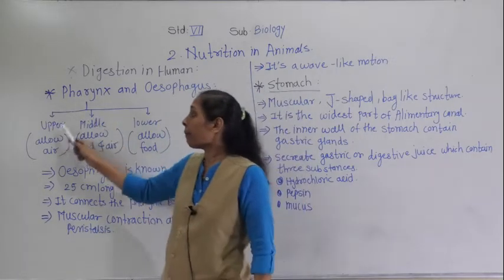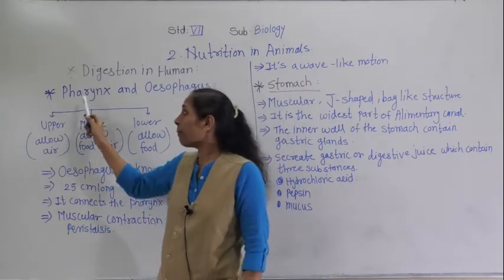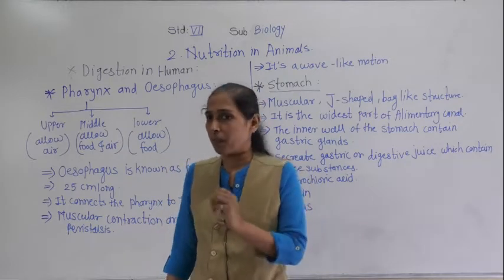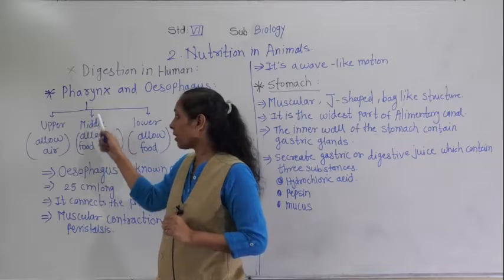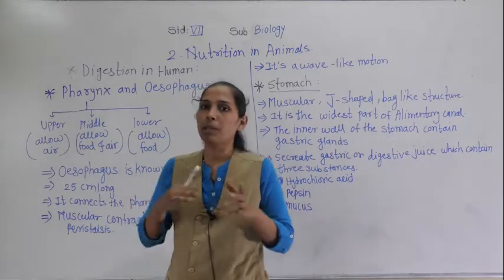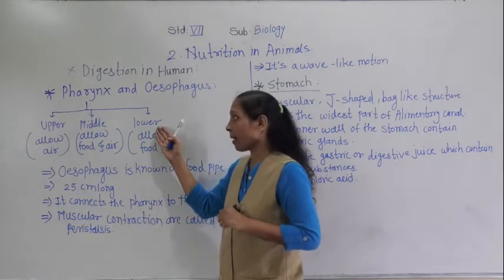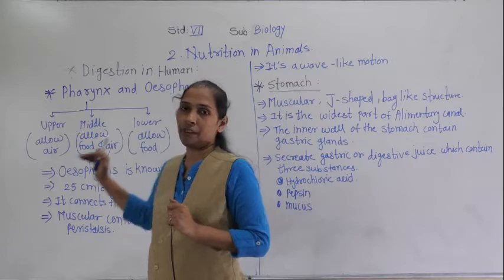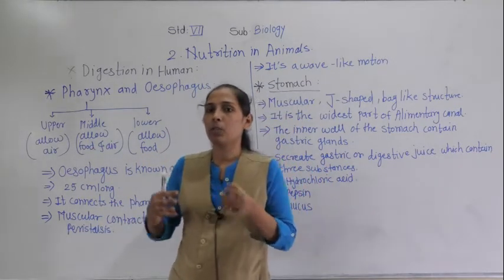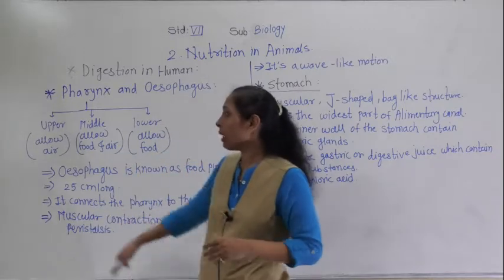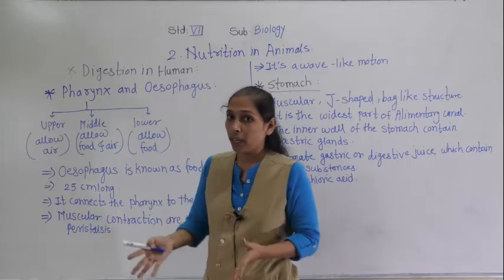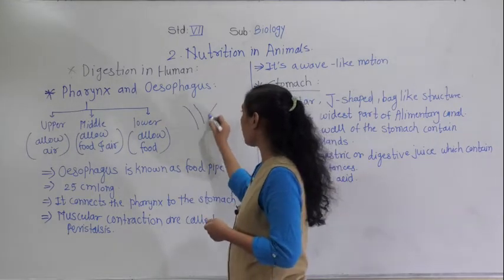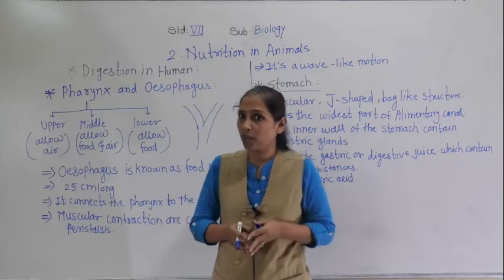The upper part of the pharynx allows only air. The middle part of the pharynx allows both food and air to pass through. The lower part of the pharynx allows only food. So from the upper part air passes, from the middle part food and air both pass, and from the lower part only food passes.